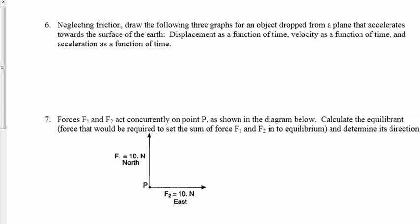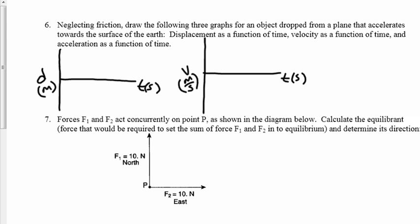On to page two here, we're asked to consider a situation where we neglect friction, and we're asked to draw three graphs for an object that's been dropped from a plane that's accelerating towards the surface of the earth. It asks us to give them a displacement as a function of time graph. So if you think about it, we know that an object dropped from a plane, as time goes on, it's going to fall further and further downwards. So if we assume that the height of the plane is our zero point, or our origin, as time goes on, it's going to fall increasingly further and further as time goes on. It won't be a straight line.